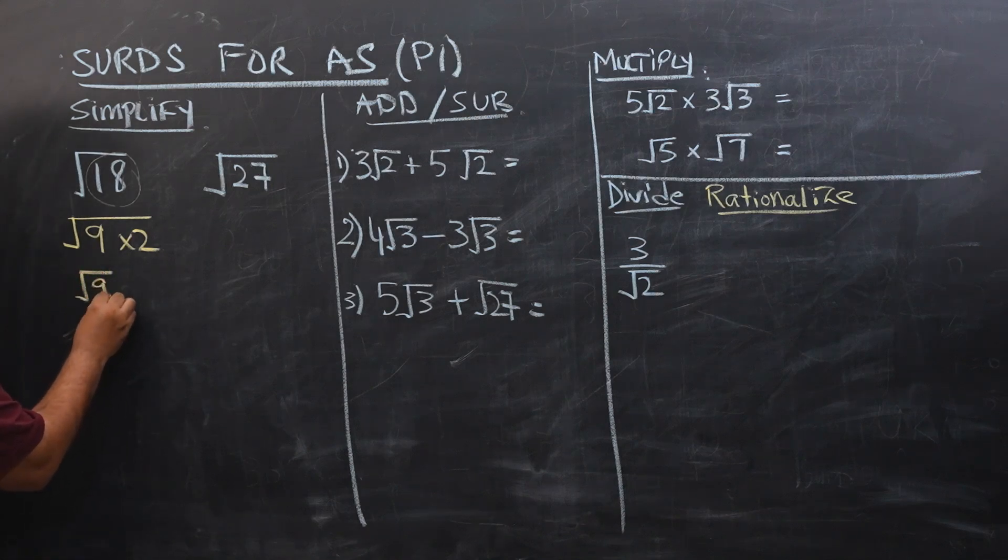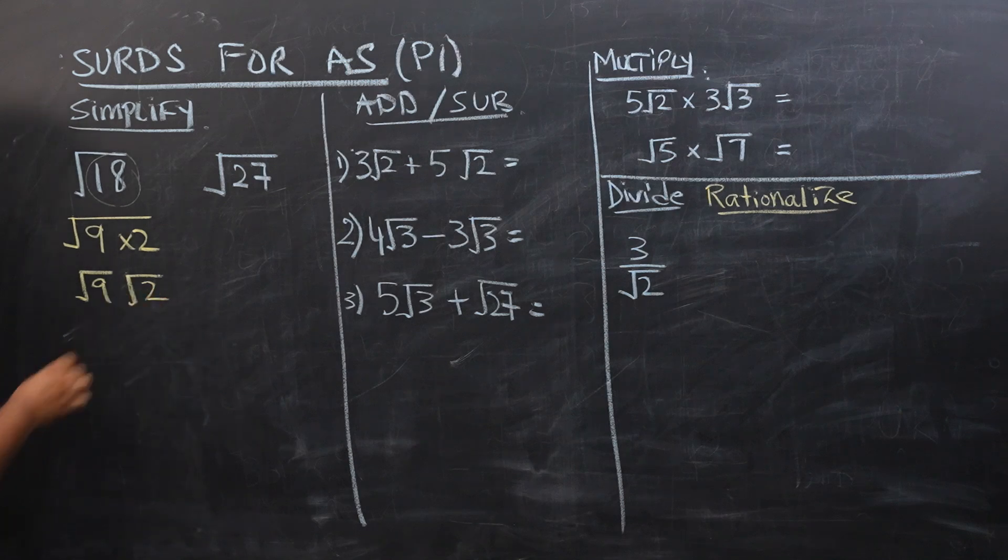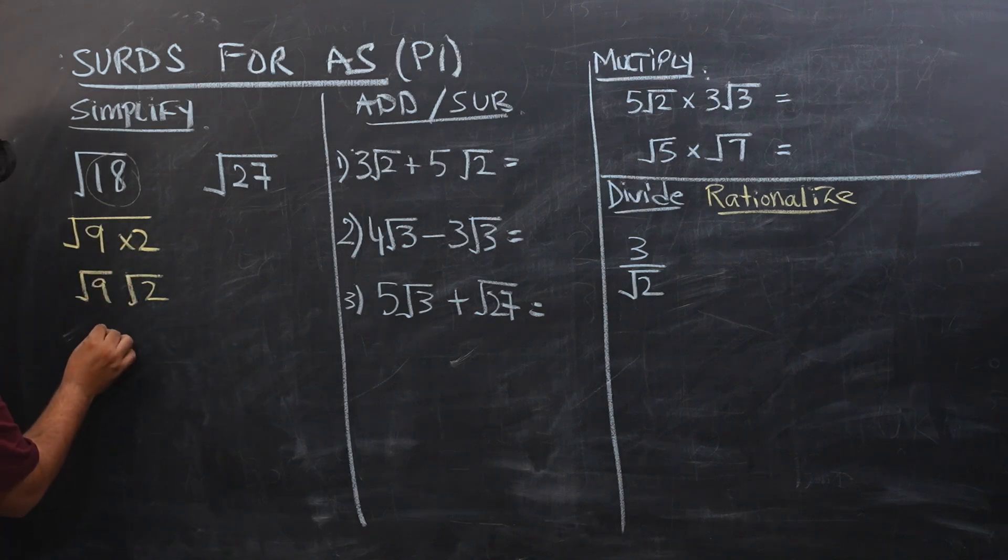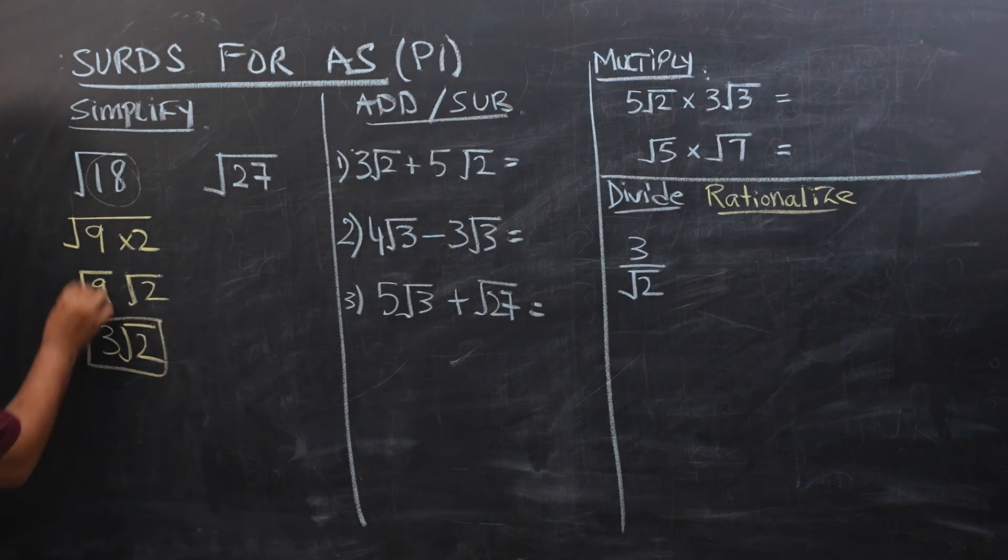I can now split square roots like this. We are allowed to split square roots when we are multiplying or dividing, but we are not allowed to split square roots like this if we are adding or subtracting. So under root 9 would be 3 and this would be square root of 2. So this is a simplified version of square root of 18.